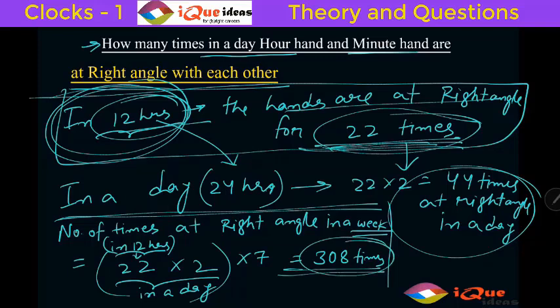So this is very important to understand. So this is 308 times at right angle in a week. Similarly you can do other questions also. Now there is one very interesting concept, let us try to understand that.